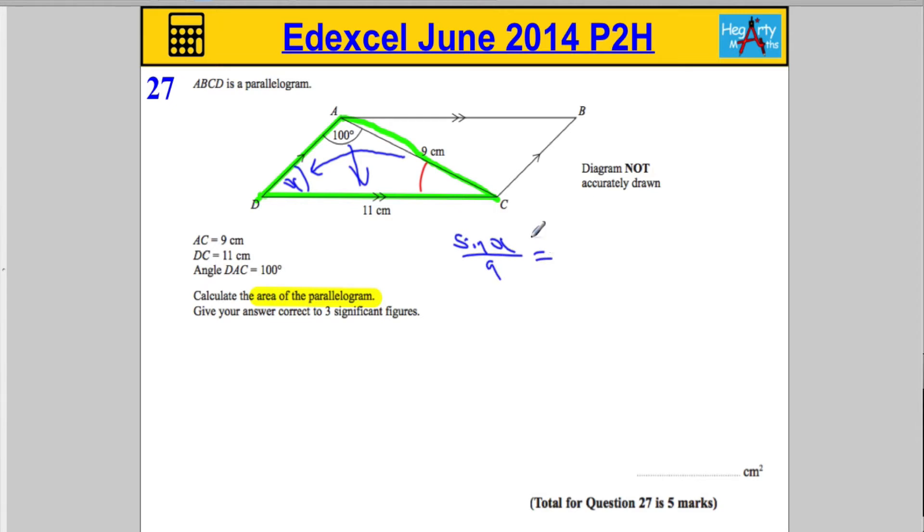should be equal to sine of the angle, 100, divided by its corresponding side, 11. Which means that sine of the angle X should equal this times 9, sine 100, over 11.